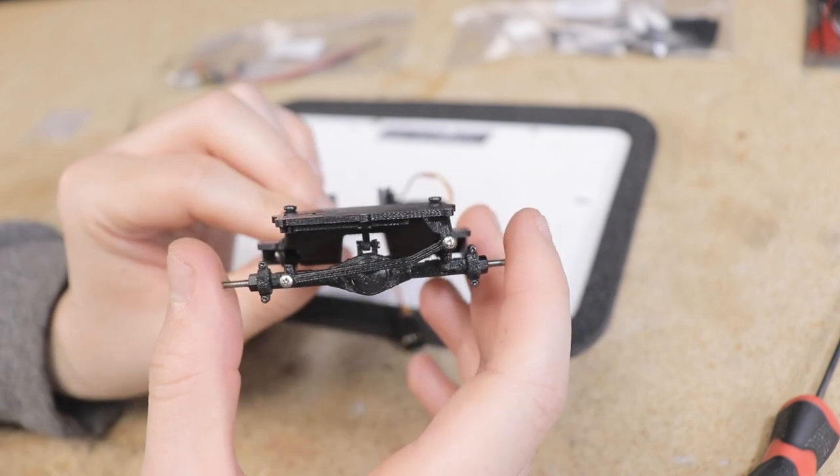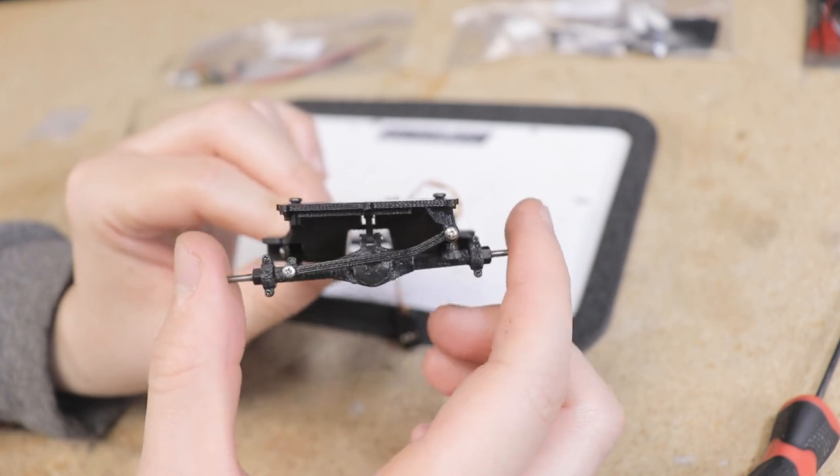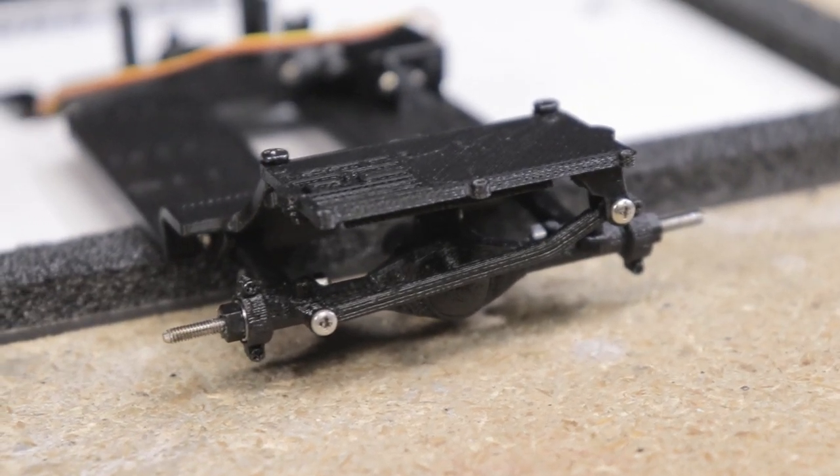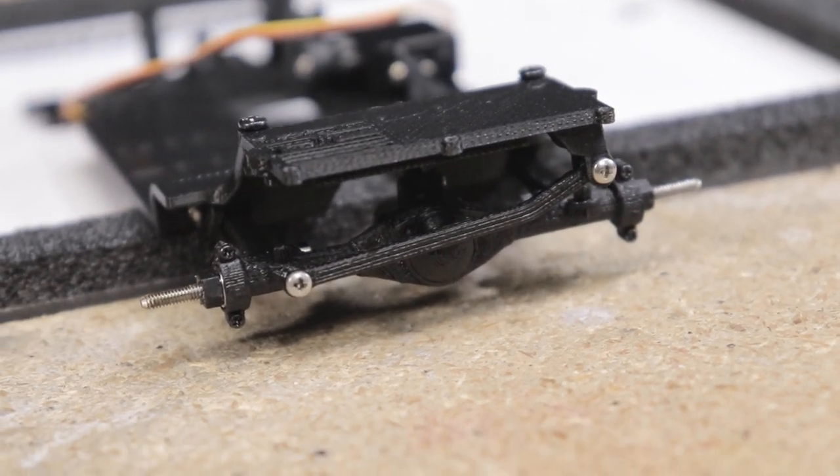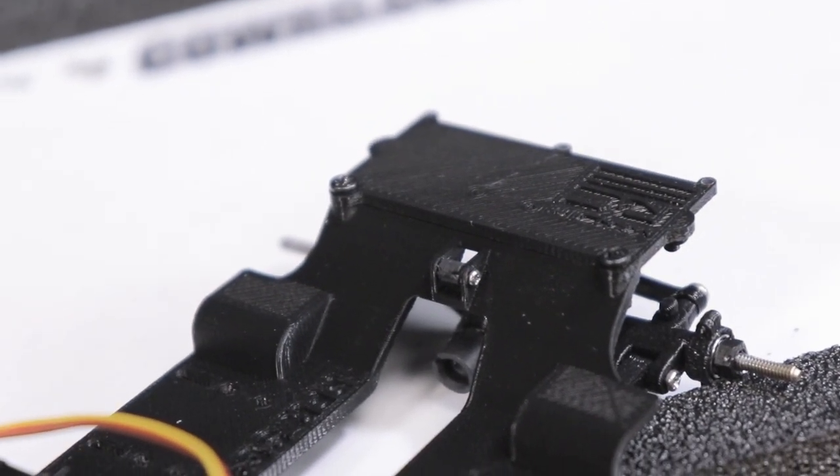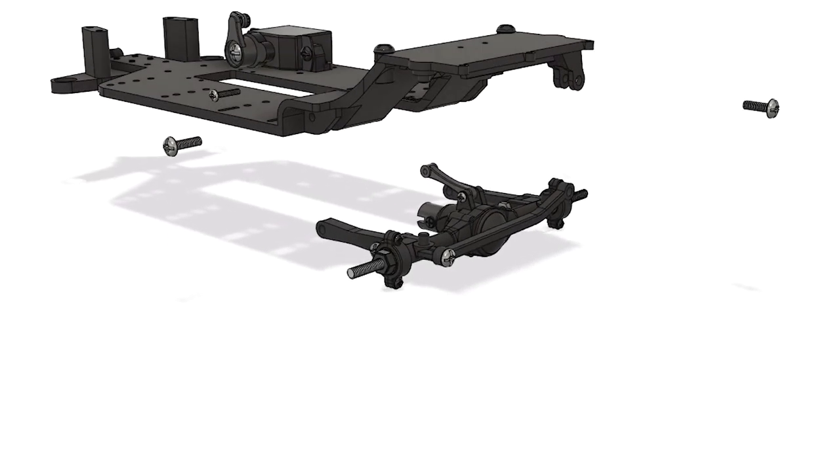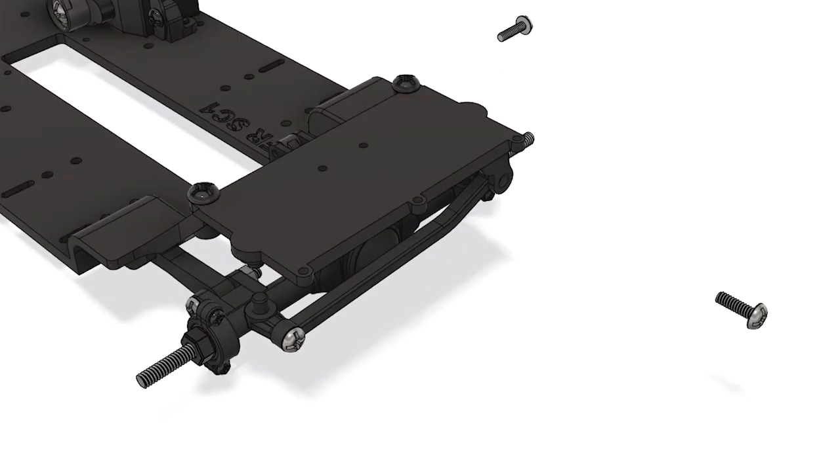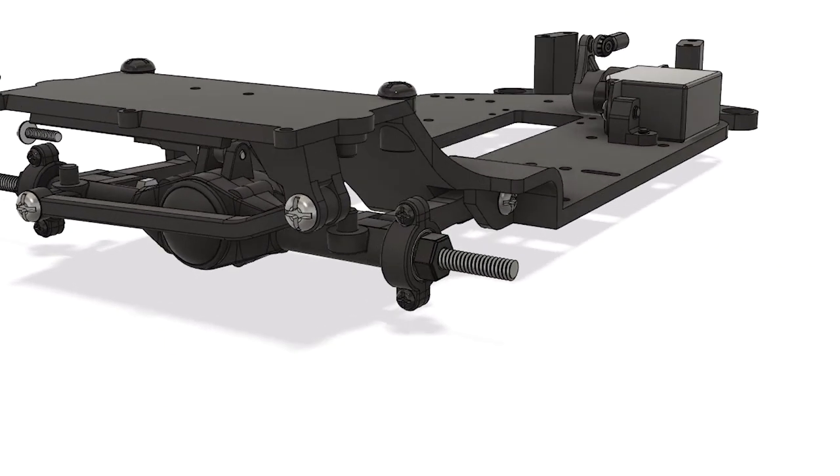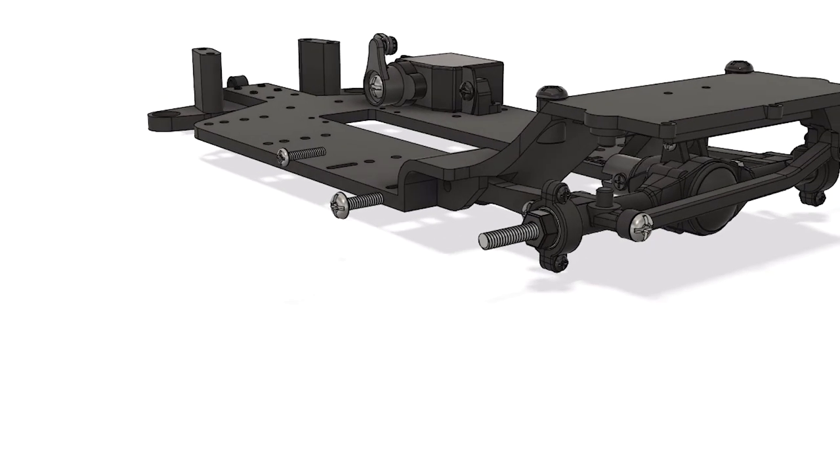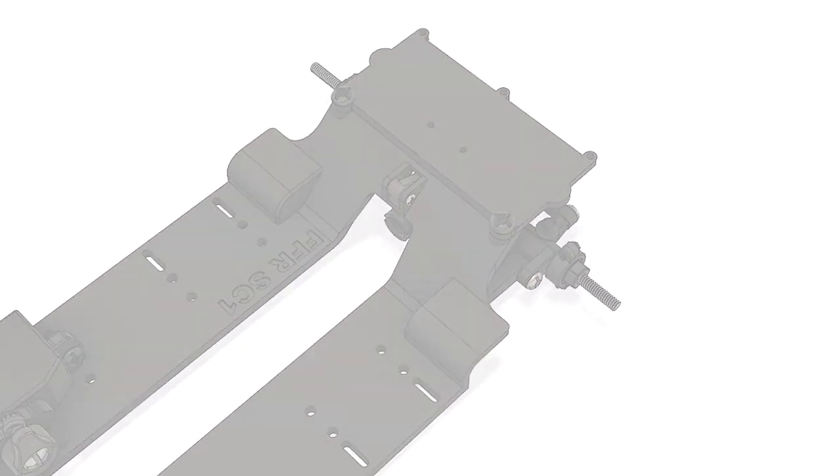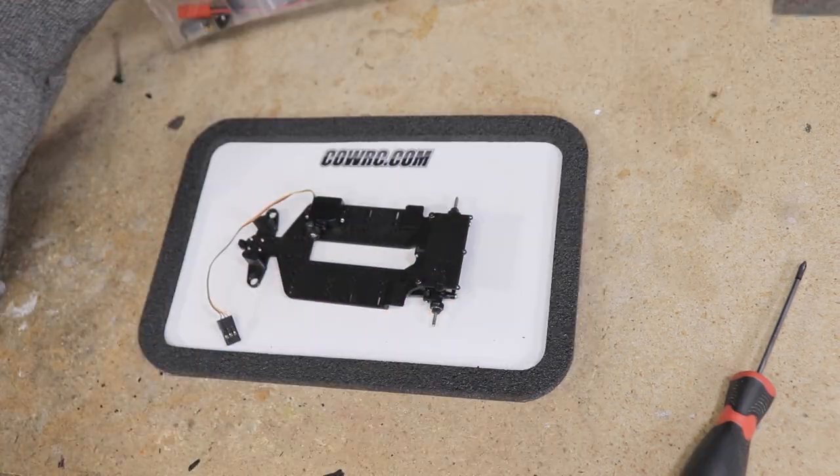This is an on-road car not a crawler so don't expect much flex but it should be able to move around a bit as you see here. As you could probably guess the rear springs go in between the axle and the chassis. A thicker 0.3 millimeter and thinner 0.2 millimeter spring is provided. I'm going to set the springs aside for now as I don't want to have to worry about them flying out as I'm building the chassis. I'll come back and install them later on.